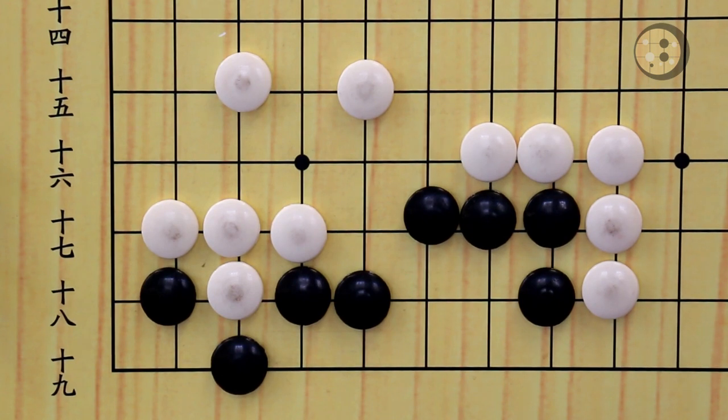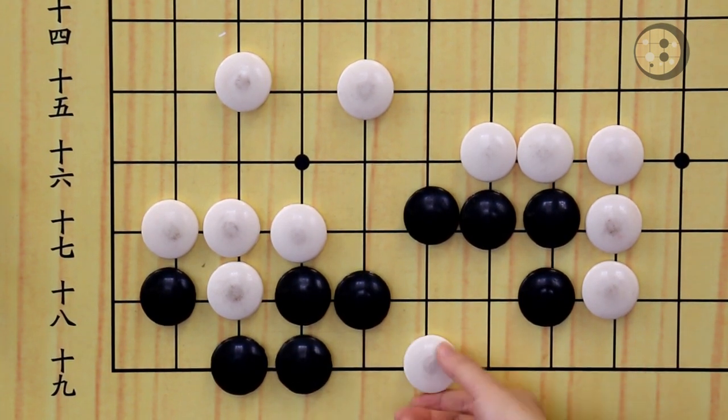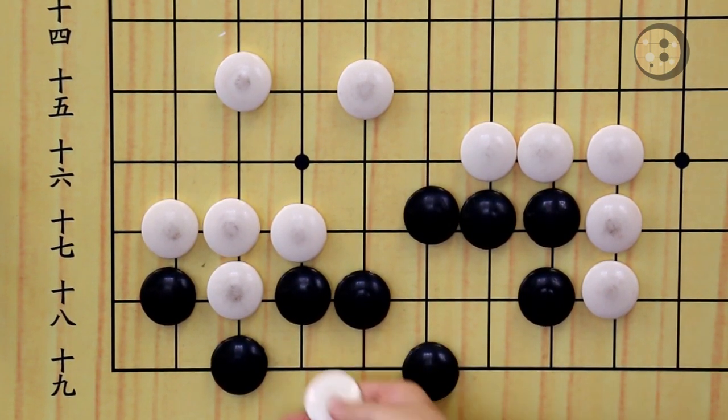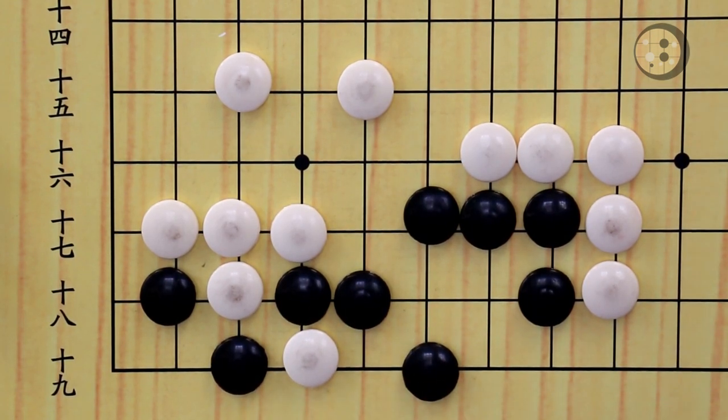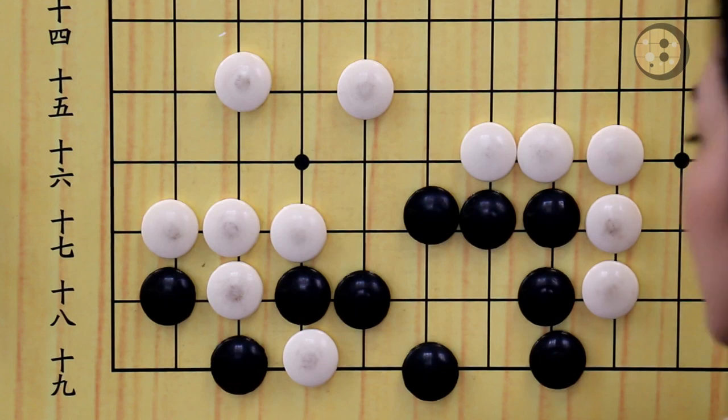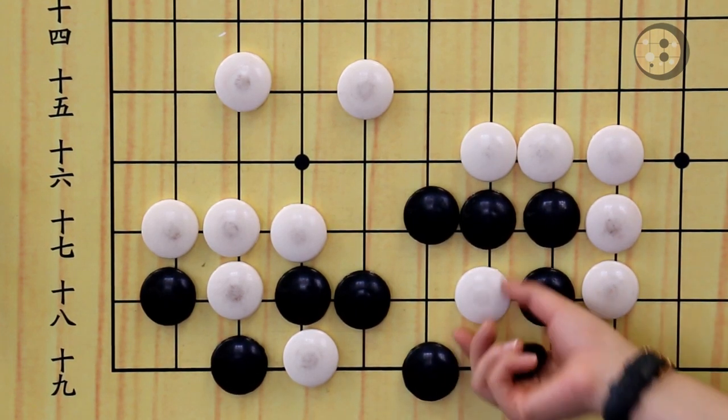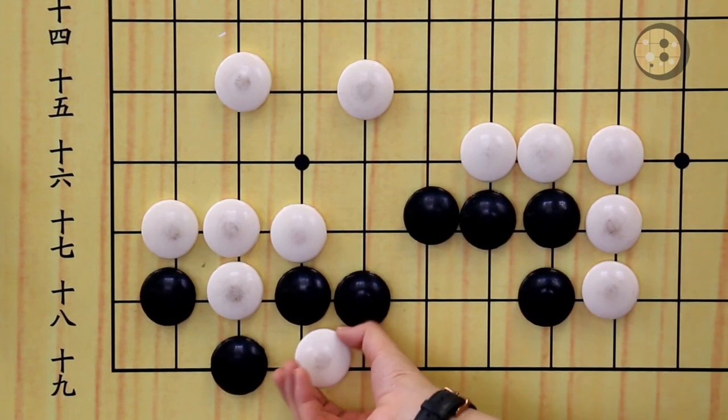Even though it's your turn, you're not able to make it alive. If you go here, white can throw in here to destroy another eye. Now you have a bent three, which is dead right now because white can take the vital point. So blocking here is not correct.